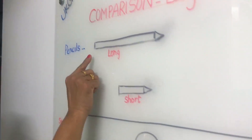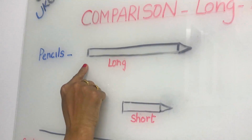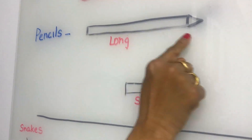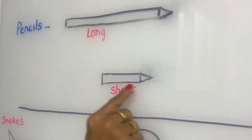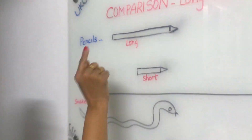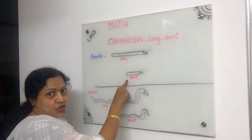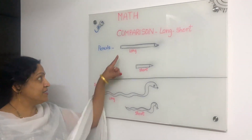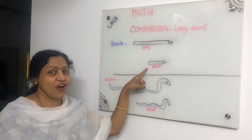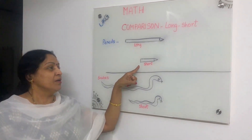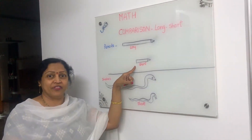See this — this is the length. This pencil is very long from here to here, and this one is very short. That's why this is long and this is short. Which one is short, children? Yes, this one is very short by length.